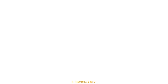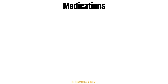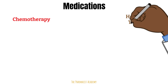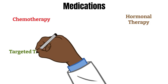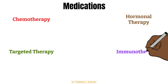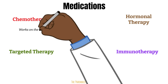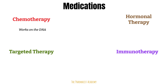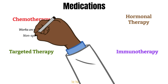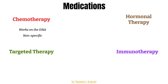There are four main types of drugs used to manage cancer patients: chemotherapy, hormonal therapy, targeted therapy, and immunotherapy. Chemotherapy is the original — we've been using it since the early 1940s. It works on the DNA to interfere with cell division, which leads to cell death. One downside of traditional chemo is that it's non-specific, so it also targets normal cells in your body that divide rapidly. This translates into side effects like nausea, vomiting, and hair loss.